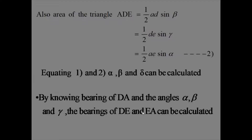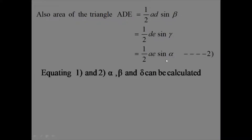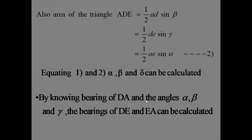The bearing of DA is known because while closing the survey in the field, you just measure the A-to-D distance and bearing. After calculating alpha, beta, and gamma by equating equations 1 and 2, and by knowing the bearing of DA — which is the closing line — the bearings of DE and EA can be calculated. This is one case. Now we will try to solve an example problem.